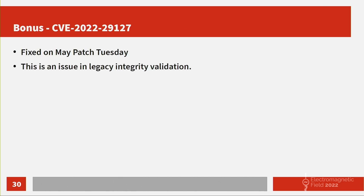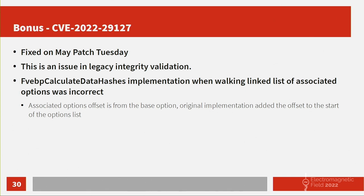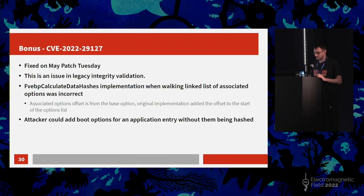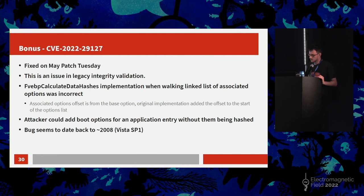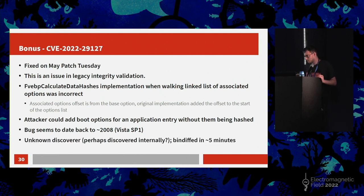There was a bug fixed last month. It's an issue in legacy BitLocker integrity validation — somehow I didn't notice it before the patch, amazingly, because the implementation was completely incorrect. They walked associated options and used the wrong base for the offset, so it was reading some other data. Potentially, an attacker could add boot options for an application entry without them being hashed or known about by BitLocker. That bug seemed to date back to Vista Service Pack 1. I have no idea who discovered it — there was no mention of any discoverer, probably reported anonymously. I diffed it in five minutes.